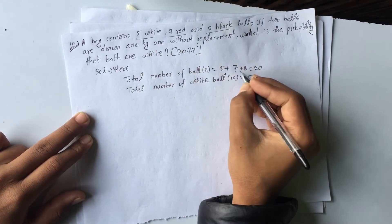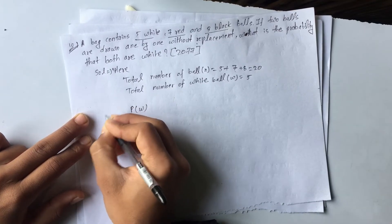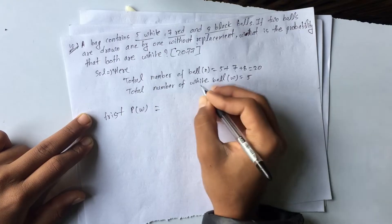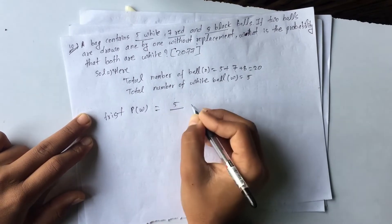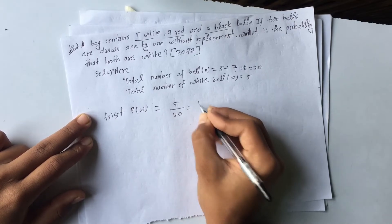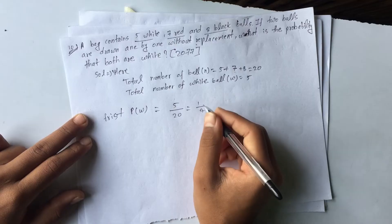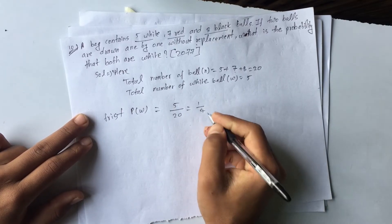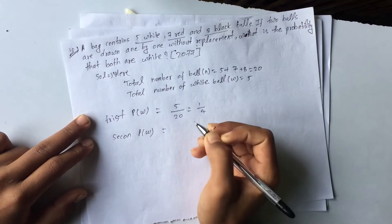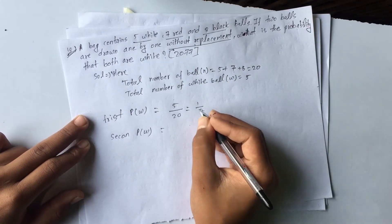At the beginning, the total number of balls is 20. The probability of drawing a white ball on the first draw is 5 out of 20, which simplifies to 1 by 4.